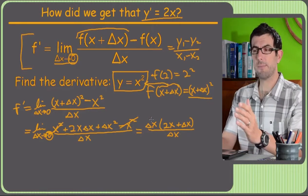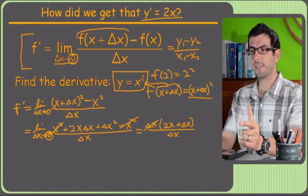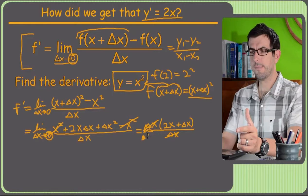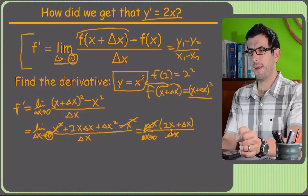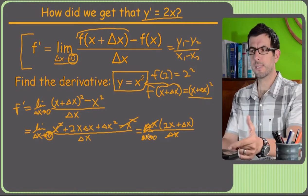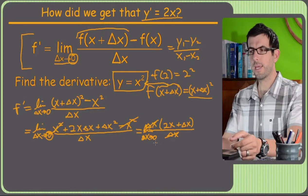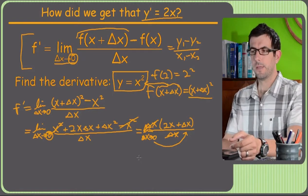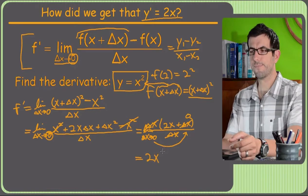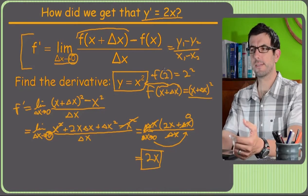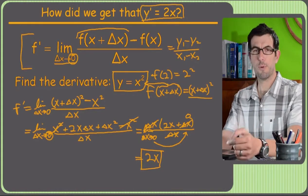So I'm going to factor out a delta x from what's left upstairs. That gives me delta x times (2x + Δx), still over delta x. And this is where the magic happens — the delta x's cancel. Now we have the limit as delta x approaches 0 of (2x + Δx). It's not a fraction anymore, so it's not indeterminate. We plug in 0 for delta x, that just goes away, and we're left with 2x. That giant mess ended up giving us the 2x we expected — pretty wonderful.